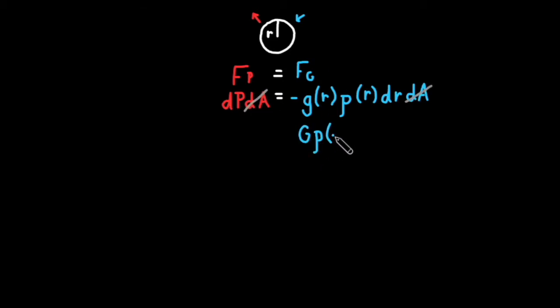We can cancel out dA on both sides of our equation and rewrite g in terms of the gravitational constant and mass. This is one of the key equations for hydrostatic equilibrium.